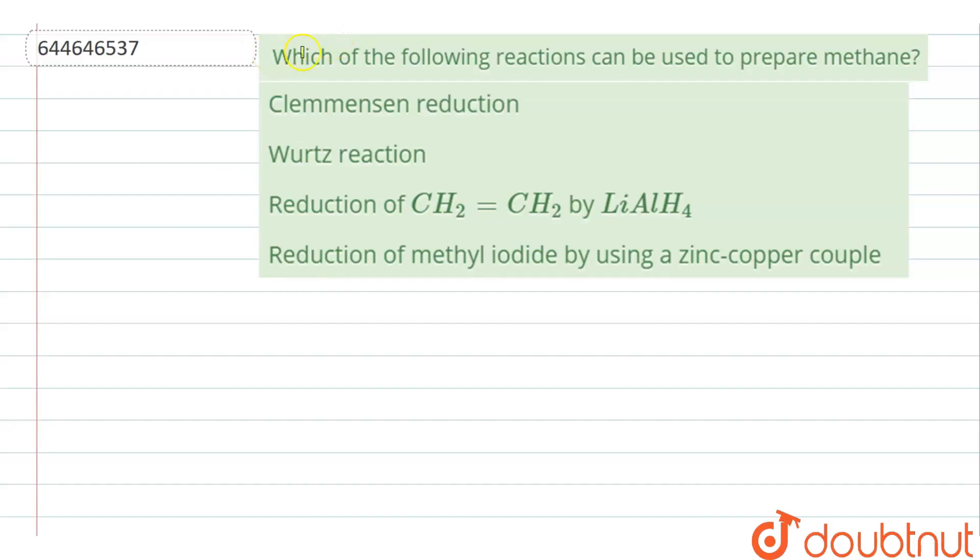The question given here is, which of the following reactions can be used to prepare methane? Options are Clemmensen reduction, Wurtz reaction, reduction of CH2 double bond CH2 by LiAlH4, and reduction of methyl iodide by using a zinc-copper couple.